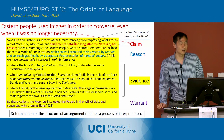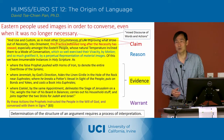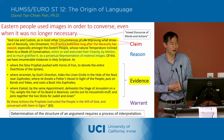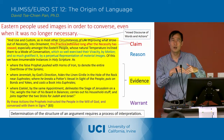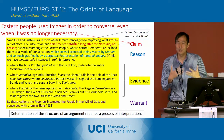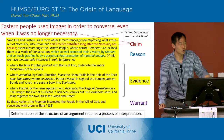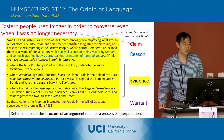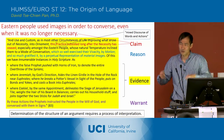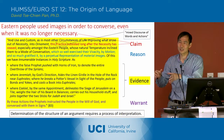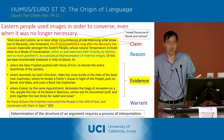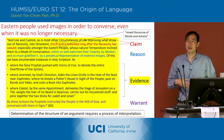He says: 'Of this we have innumerable instances in Holy Scripture.' He immediately gives us evidence — examples of what he's talking about. He gives examples of different prophets and how they use not speech but actions or images. He says, 'where the false prophet pushed with horns of iron to denote the entire overthrow of the Syrians.' So this prophet used horns of iron — just pushed them — in order to demonstrate the overthrow of the Syrians rather than saying something. It's an action carried out to communicate.